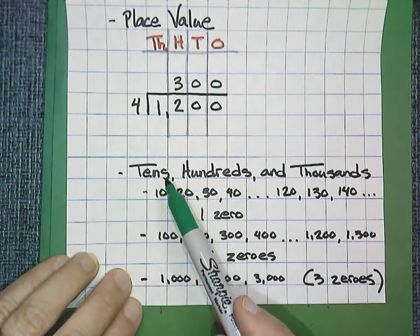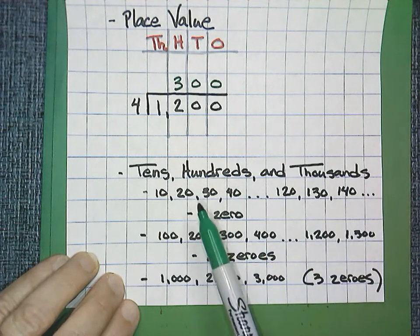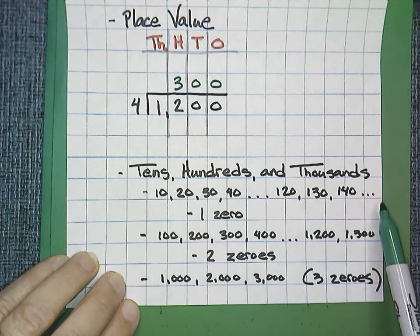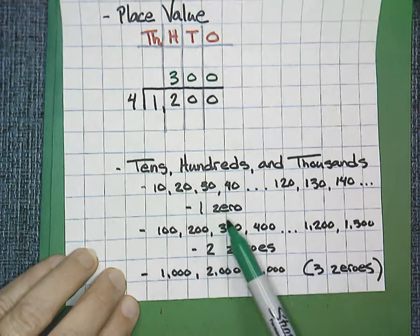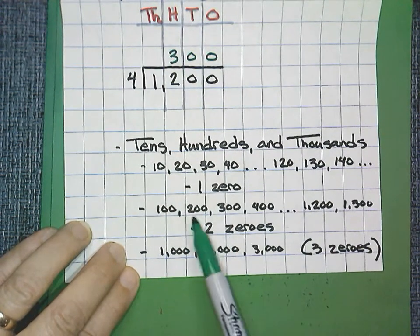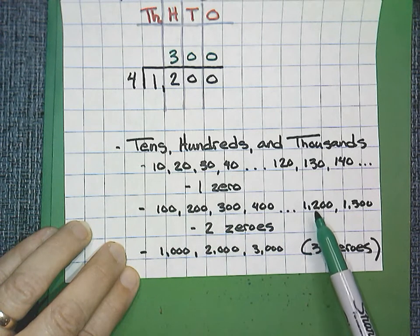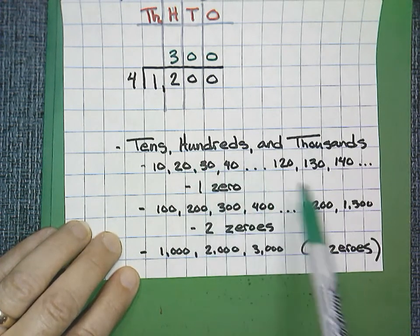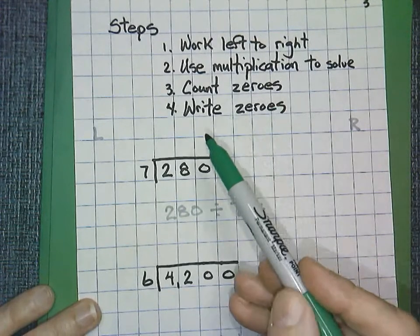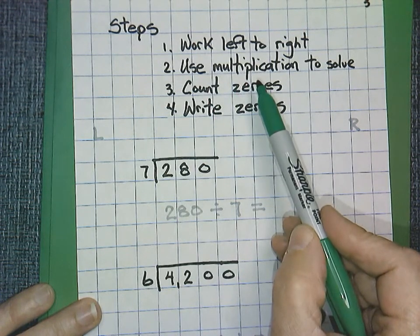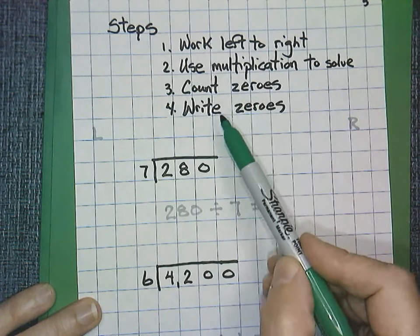Our lesson deals with dividends of tens, hundreds, and thousands. By tens, we mean counting by tens — 10, 20, 30, 40 — though that can go into the hundreds and higher. A dividend with one zero is a ten. Hundreds have two zeros, for example 100, 200, 300, or numbers like 1,200 and 1,300. Thousands have three zeros. Our steps are easy: work from left to right on the dividend, use multiplication to find division facts, and count the zeros and write the zeros.